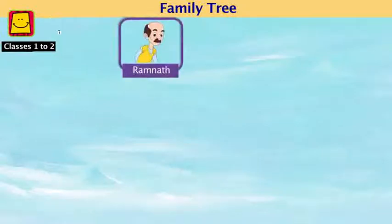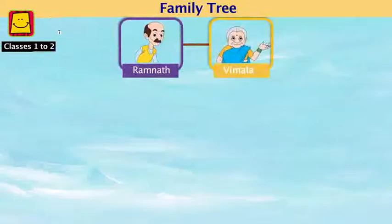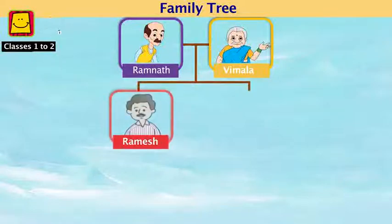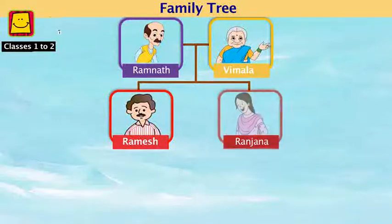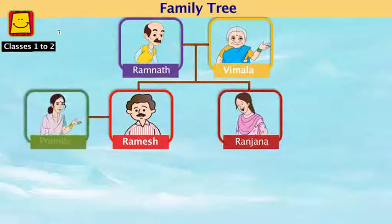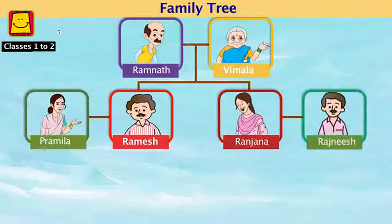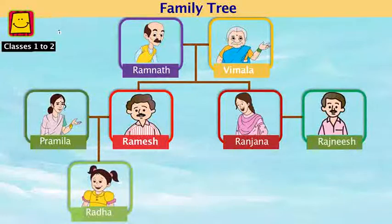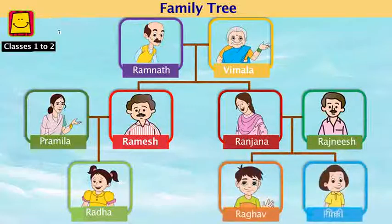This is Ramnath and this is Vimla. Ramnath is Radha's paternal grandfather and Vimla is Radha's paternal grandmother and Ramnath's wife. Ramnath and Vimla have two children — one is Ramesh and the other is Ranjana. Ramesh is married to Pramila, which means Ramesh's wife's name is Pramila, and Ranjana's husband's name is Rajneesh. Pramila and Ramesh have a daughter whose name is Radha, and Ranjana and Rajneesh have two children — one is Raghav and the other is Pinky.